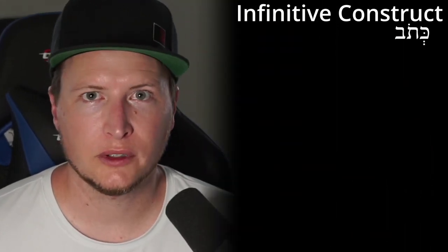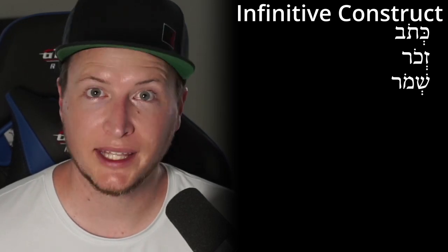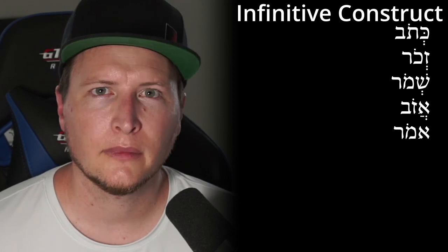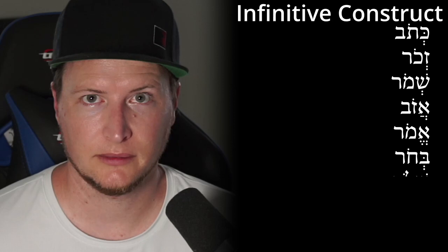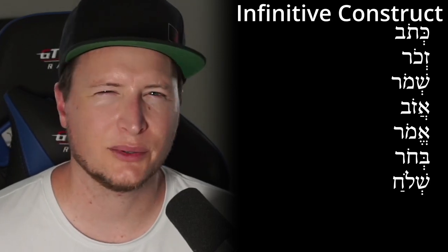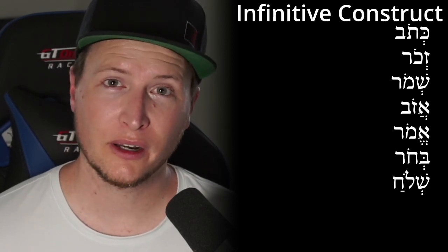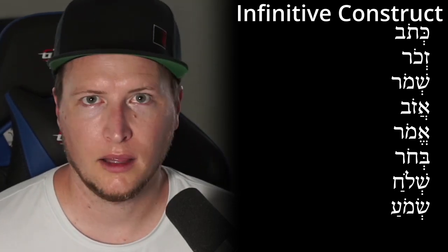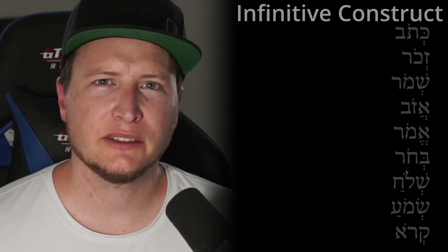We've said it before and we're saying it again — it's still true. Look at all the different forms across strong and weak verbs: katov to write, zakor to remember, shamor to keep, azov to abandon, emor to say, bahor to choose, sheloach to send — this one has a furtive patah where the patah is last but pronounced before the chet.